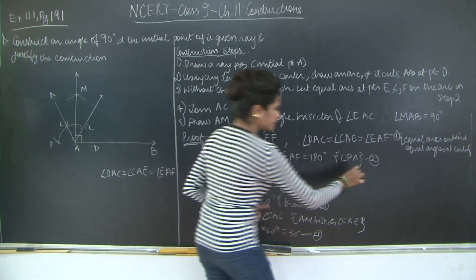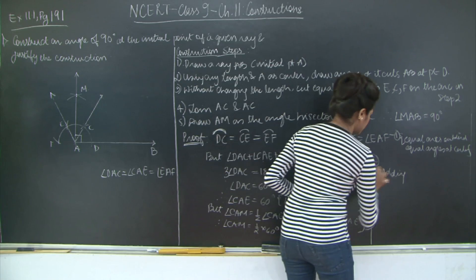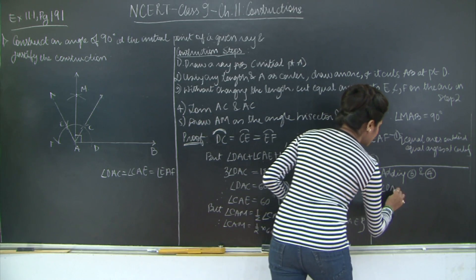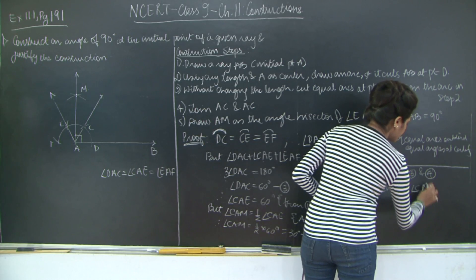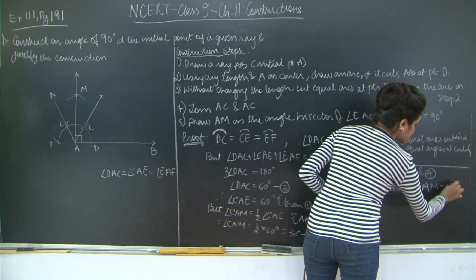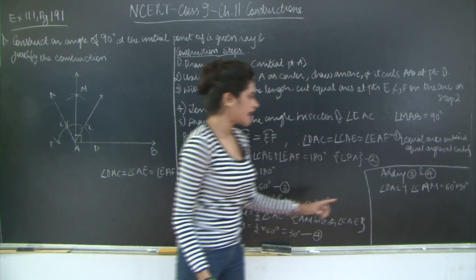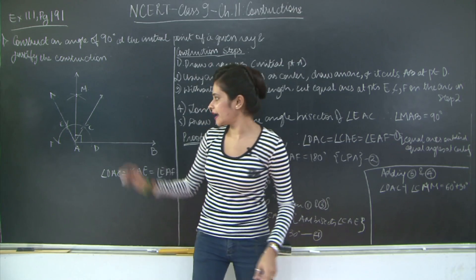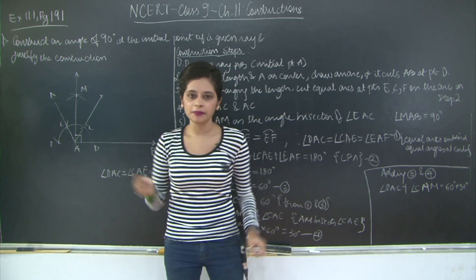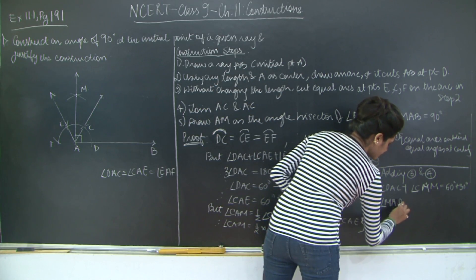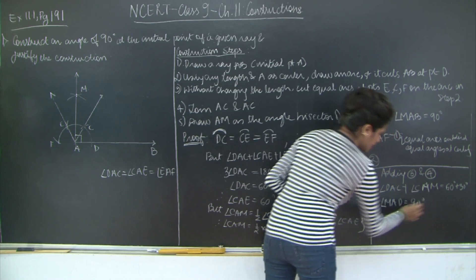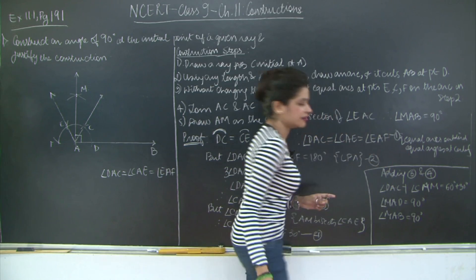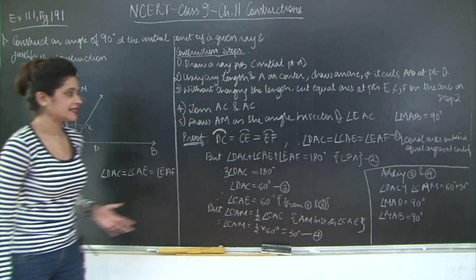Adding equations 3 and 4: angle DAC plus angle CAM equals 60 degrees plus 30 degrees. When equals are added to equals, the wholes are equal. So DAC plus CAM is angle MAD, which equals 90 degrees. Now MAD is the same as MAB because D lies on line segment AB. Hence we have proved that angle MAB is 90 degrees.